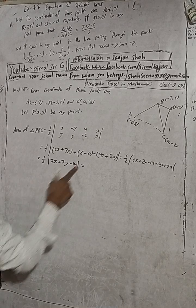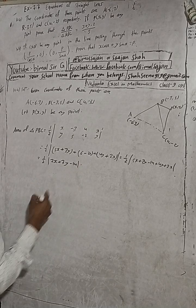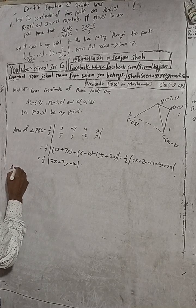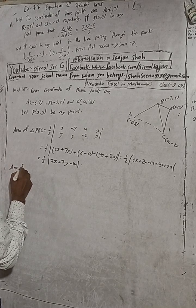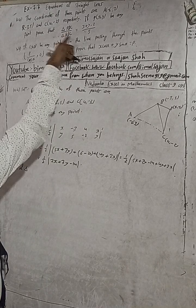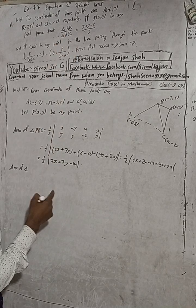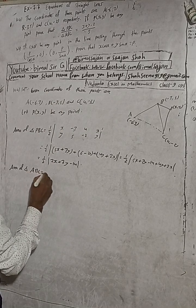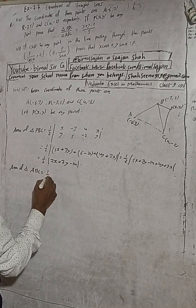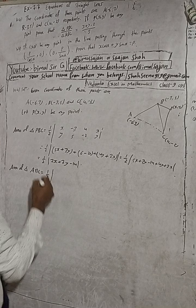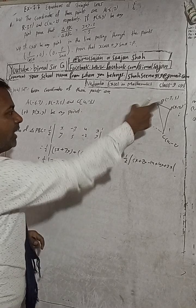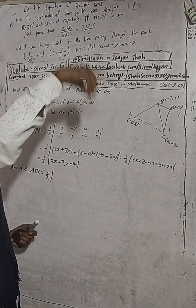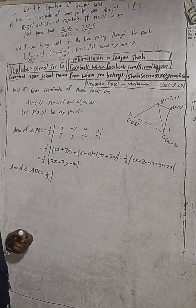Now, area of triangle ABC. While finding the area of triangle ABC, we must take the points anti-clockwise. So we arrange A, B, C in anti-clockwise order.